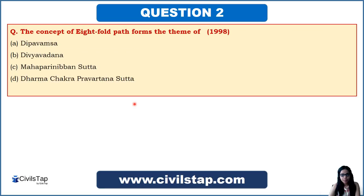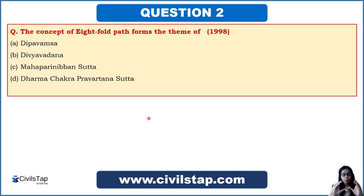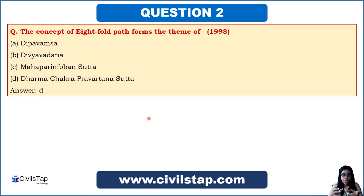This question came in the Prelims of 1998: 'The concept of the Eightfold Path forms the theme of which text?' Options include Deepavamsa, Divyavadana, Mahaparinibbana Sutta, and Dharma Chakra Pravartana Sutta. Since Gautam Buddha taught the Eightfold Path in his first sermon, and all those learnings are part of the Dharma Chakra Pravartana Sutta, the answer is option D. UPSC questions are mostly keyword-based — do not miss any key word from NCERT and CCRT.